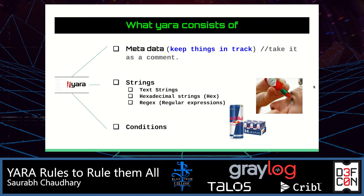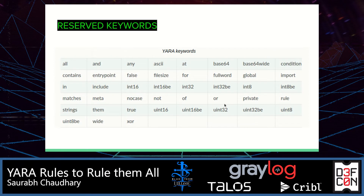If you want your YARA rules to last generations, write rules based on code reuse. A rule which only matches a single malware file is no better than a hash. For example, GandCrab has five different versions, and with one rule based on function reuse you can find all those versions. When a malware mutates or a threat actor writes a new version, they reuse code and functions — that is what we leverage. Strings can change, but code reuse is more probable to hit. Note that certain keywords are reserved for logical expressions like ascii, int32, uint16, pe, wide, xor, etc.